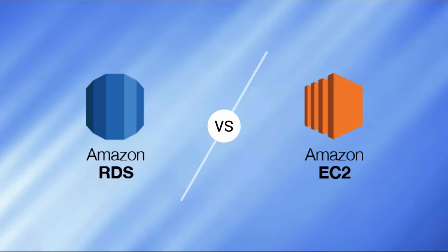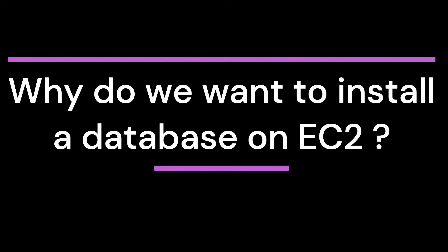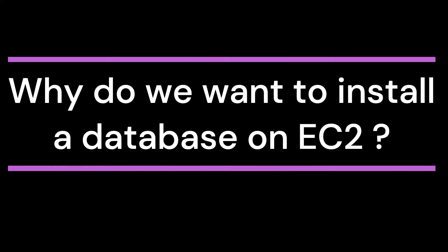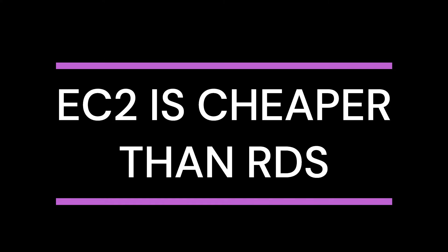AWS already provides a relational database service for creating multiple different types of databases. You might be thinking why we want to install a database on EC2. There are two main reasons for this. The first reason is cost — if you are doing a development or testing activity, then installing a database directly on an EC2 machine will be a cheaper option.